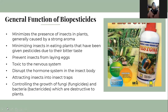The general functions of biopesticides include: minimizing insect infestation on plants, minimizing insects in plants that have been given pesticide, preventing insects at early age by disrupting the nervous system and hormone system of the insect body, and attracting insects to insect traps, as well as controlling the growth of fungi and bacteria which are destructive to plants.